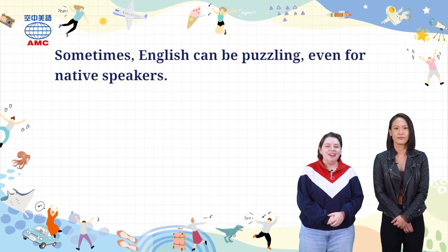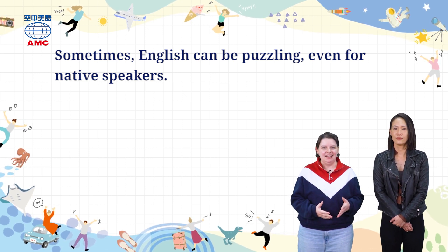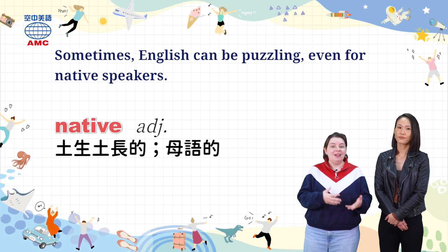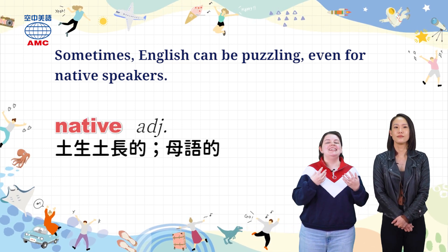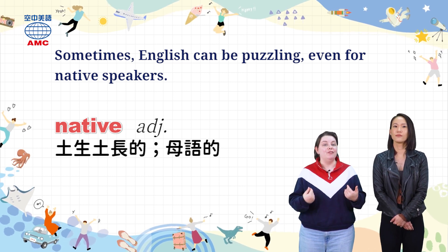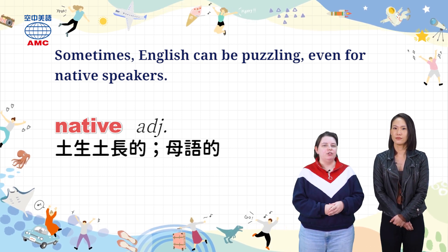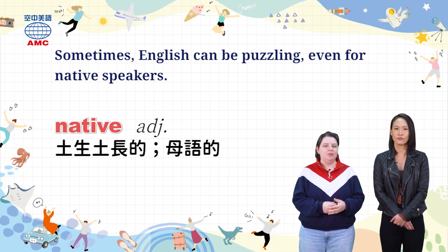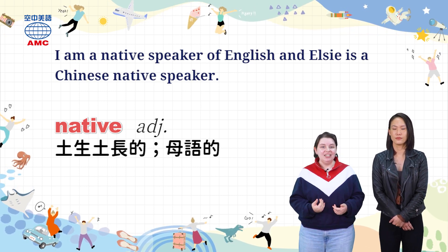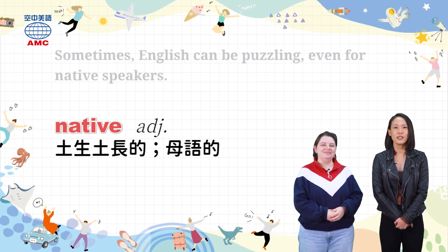The article begins by saying sometimes English can be puzzling, even for native speakers. When something is from a place, we say it is native to that place. For example, 'I'm a native of Ireland,' and your native language is the first language you learned as a child. We can say 'I am a native speaker of English,' and Elsie is a Chinese native speaker.